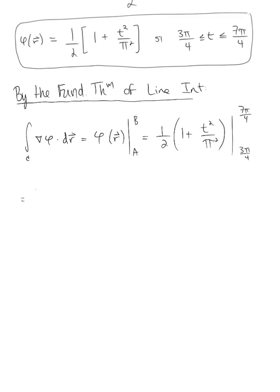So here we go, keeping one half on the outside here. We have one half multiplied by 1 plus, we'll think of this as 1 over π², multiplied by 7π over 4 squared, minus 1 plus 1 over π², multiplied by 3π over 4 squared. And we've got some nice simplification here.